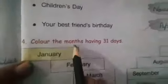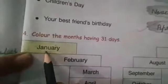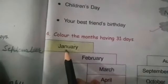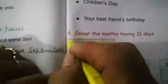Number four: color the month having 31 days. January — how many days are there in January? 31 days, so we will color it. February has 28 or 29 days, so we will not color it.